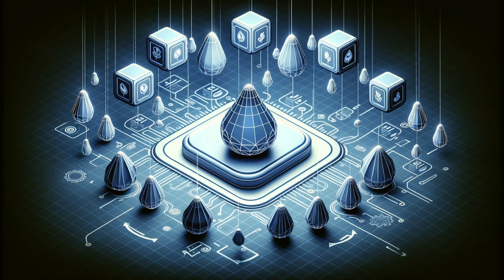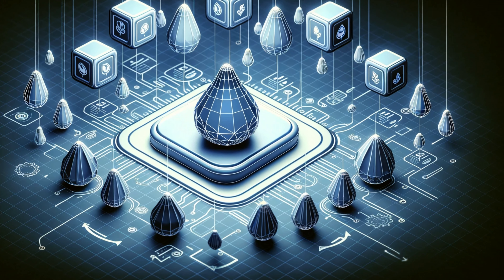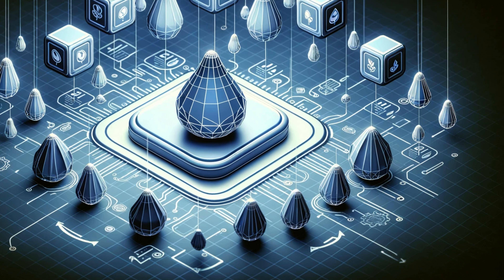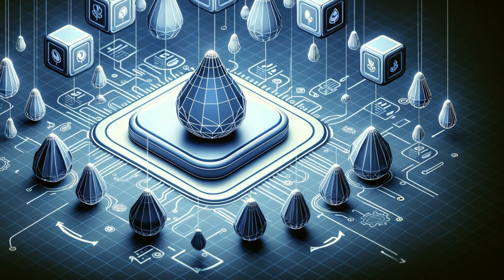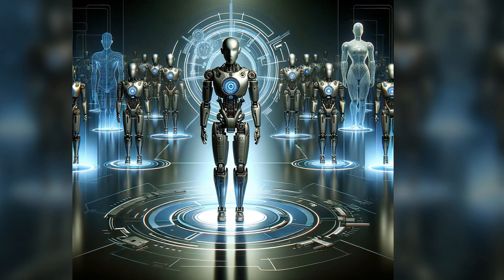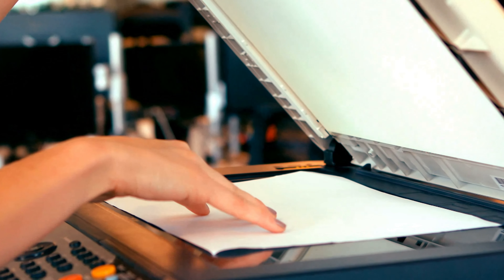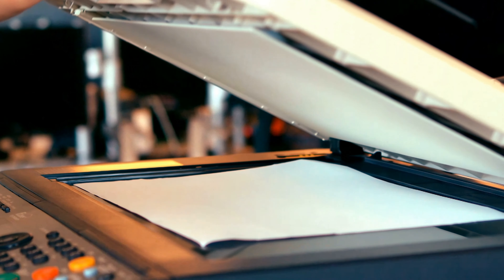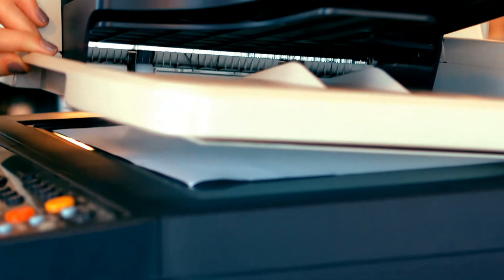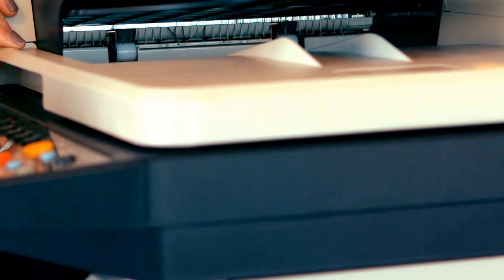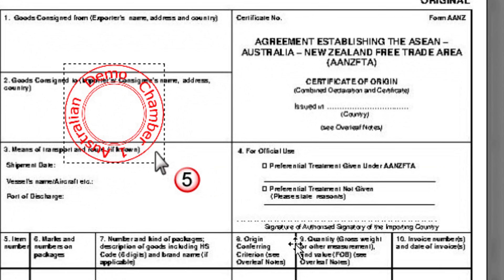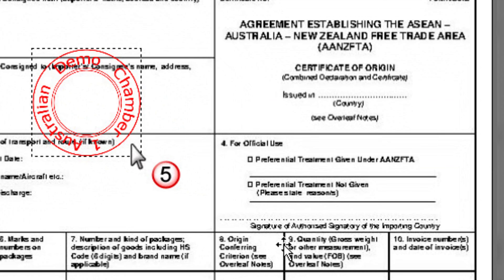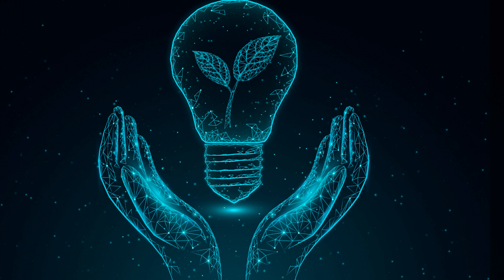Next is the Prototype Pattern. It creates new objects by copying existing objects, also known as the Prototype. This pattern is particularly useful when creation of an object is more convenient or efficient through cloning. You can think of it like photocopying a document — instead of recreating the content from scratch, you just make a copy and then add stamps or changes to that photocopy.